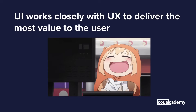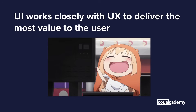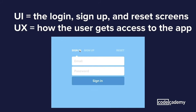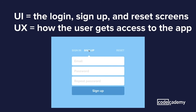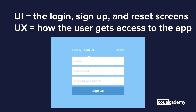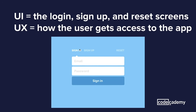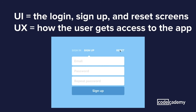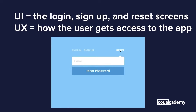You often see UI working in tandem with UX, or user experience. UI focuses on what the user will use to navigate through the app — in this case, the buttons and forms on the screen. While UX focuses on providing the user with value, so the actions the user needs to take to get access to the app. The two are connected so that the user can get the most use from the app while having a comfortable experience.